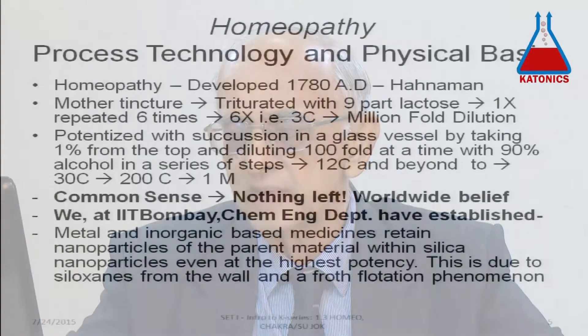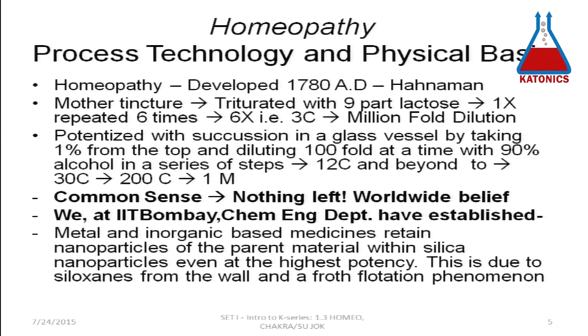Now, there is a centisimal scale which is 100-fold. So 6X is equal to 3C, which is a million-fold dilution of the starting mother tincture. This is then potentized with suction in a glass vessel, taking one percent from the top and diluting 100-fold at a time with 90 percent alcohol in a series of steps to 12C and beyond — to 30C, 200C and 1M.